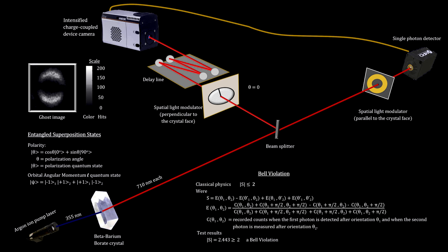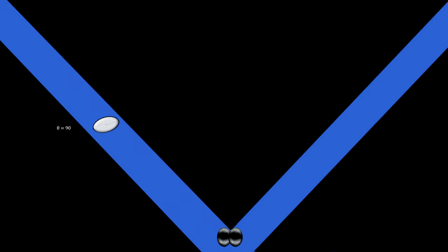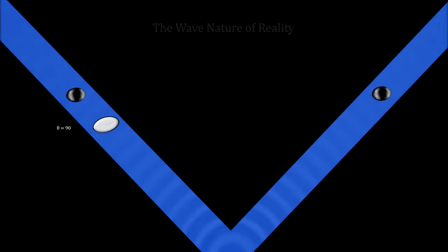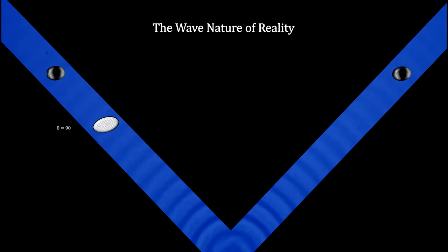The counts show a Bell violation, proof that there are no hidden variables involved. Therefore, we see that the entanglement is real, but it is not spooky action at a distance, as Einstein proposed. It is just the wave nature of reality, as Bohr had proposed.